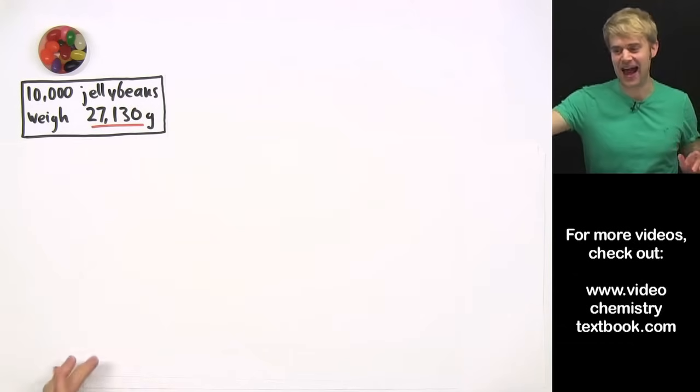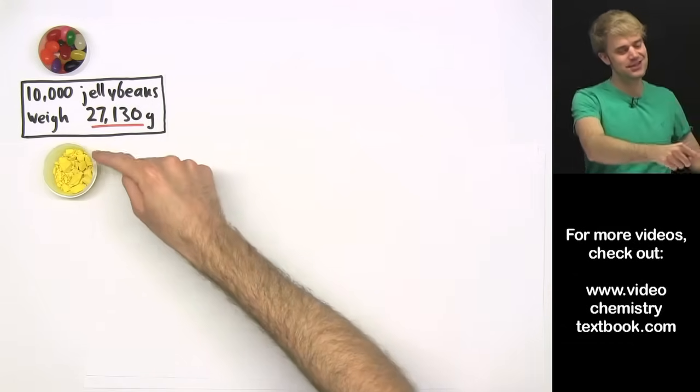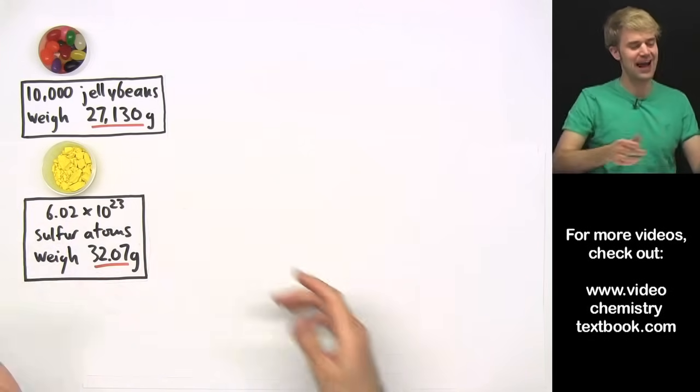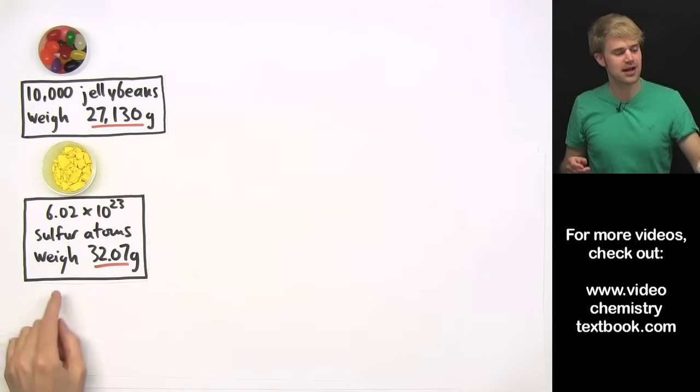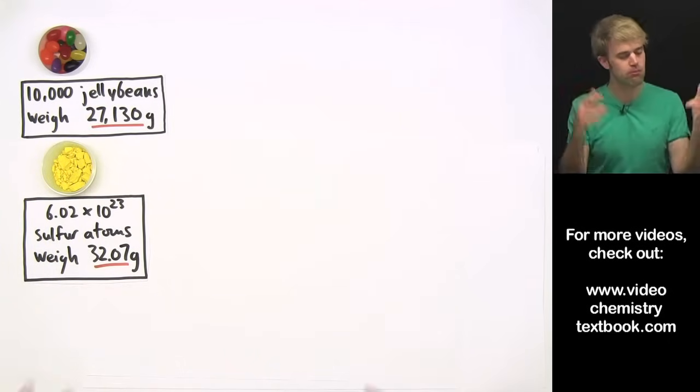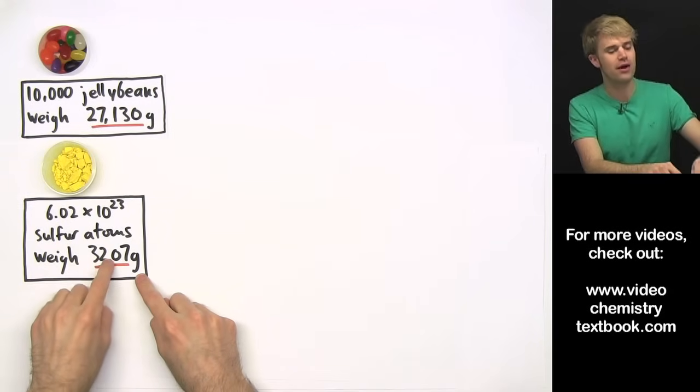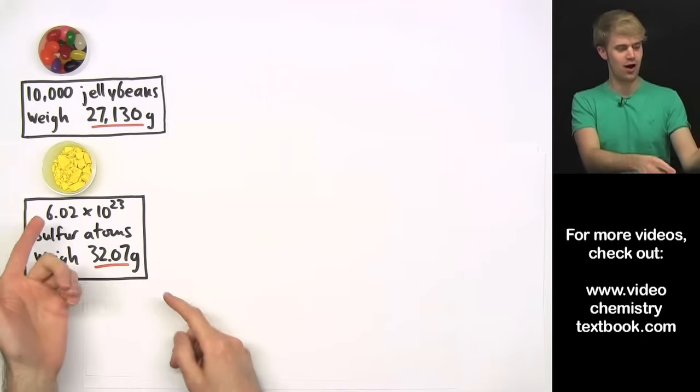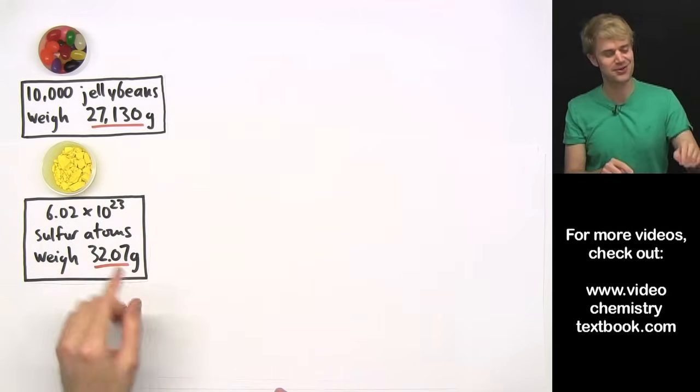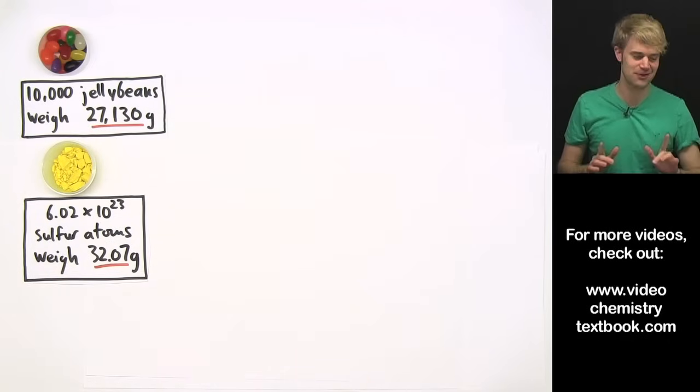So in other words, instead of having to count, if I know how much 10,000 jelly beans weigh, all I got to do is weigh out that amount. We can do the exact same thing here with moles. I told you there's about 602 hexillion sulfur atoms here. Of course, I didn't count that out. That's because I know that 602 hexillion sulfur atoms, a mole of sulfur atoms, weighs just about 32.07 grams.